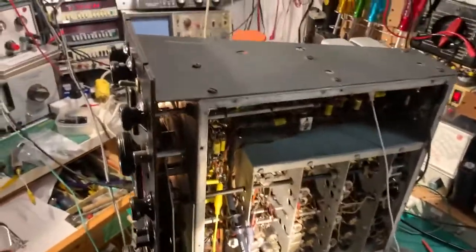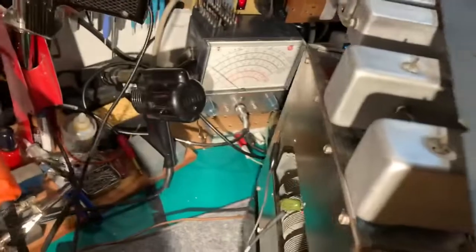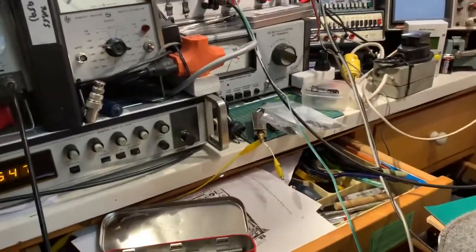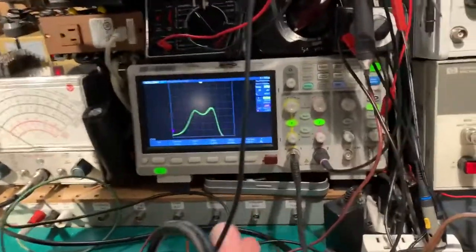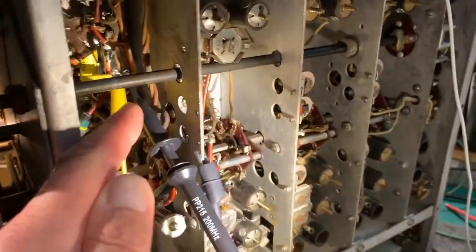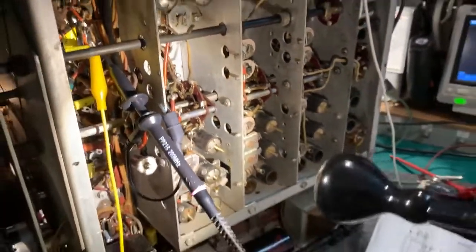And all I'm doing is feeding that sweep signal into the AF stages of the mixer. And the sweep output of the marker generator is going to the X input of the scope which is channel one. And channel two of the scope is coupled to the detector of the receiver. So it's a pretty simple setup.